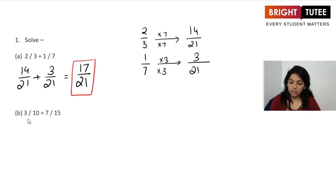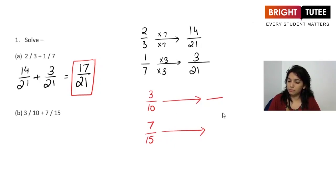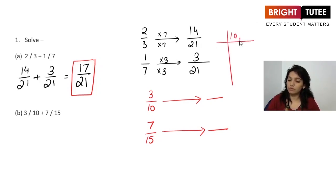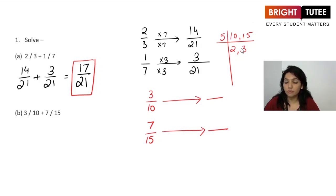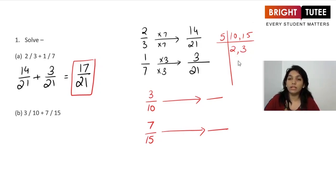Next: 3/10 plus 7/15. We need to convert them into a common denominator. For 10 and 15, both divide by 5, giving 2 and 3. Since 2 and 3 have no common factor, the LCM comes out to be 5 × 2 × 3 = 30.